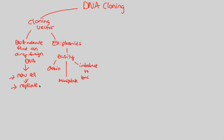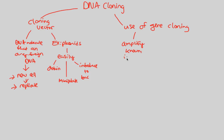Why did we do this? This is the final topic of DNA cloning. The use of gene cloning is to amplify a known, important gene — like insulin, our ongoing example. Many diabetic people need to inject themselves with this biological protein. How do the hundreds of millions of people who need it have enough insulin? Insulin would take a long time to acquire otherwise. What happens is you do DNA cloning within bacteria.